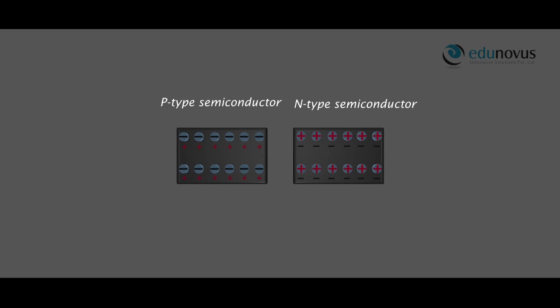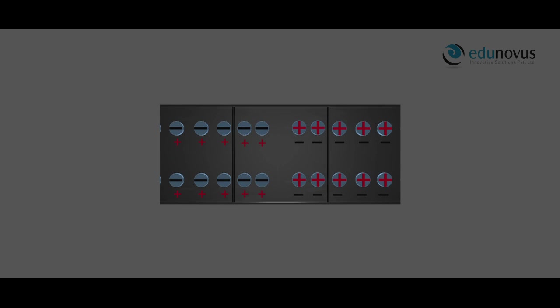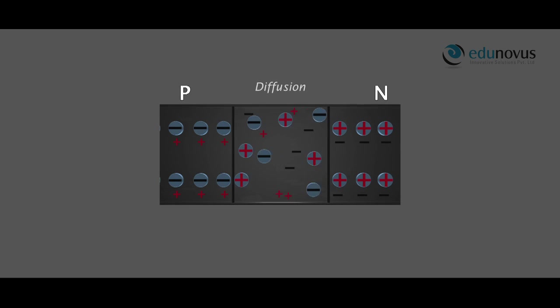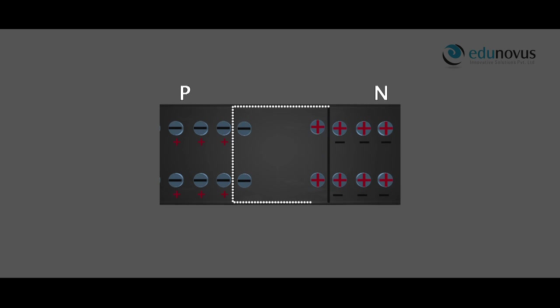The combination of P-type and N-type semiconductors results in a PN junction diode. At the junction, diffusion takes place. Due to the higher concentration of electrons in the N section, electrons diffuse from the N side to the P side, leaving behind ionized positive charges which are immovable. As holes and electrons continue to diffuse, a layer of negative charge on the P side and a layer of positive charge on the N side of the junction develops. This junction region is known as the depletion layer.